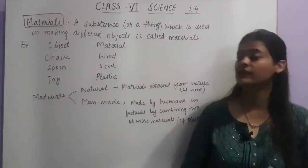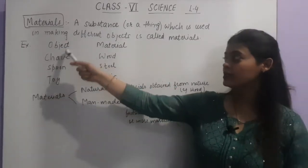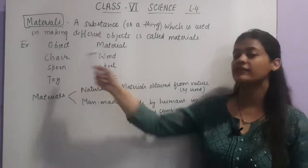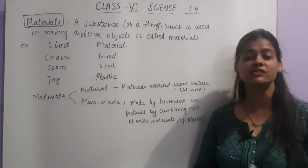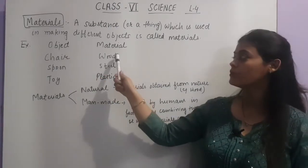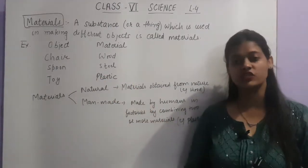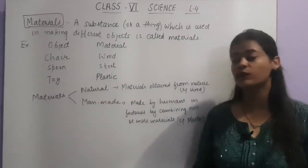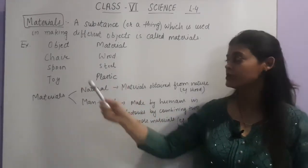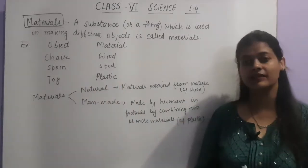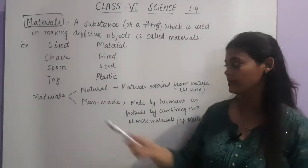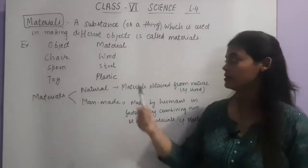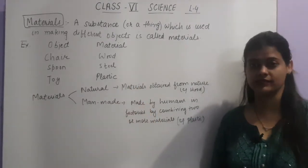For example, these are the objects and these are the materials. Like chair — chair is made up of wood, so the material of chair is wood. Spoon is made up of steel, so here the object is spoon and the material is steel. Toy is made up of plastic, so the material is plastic.